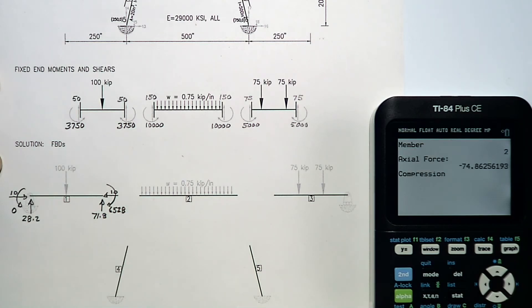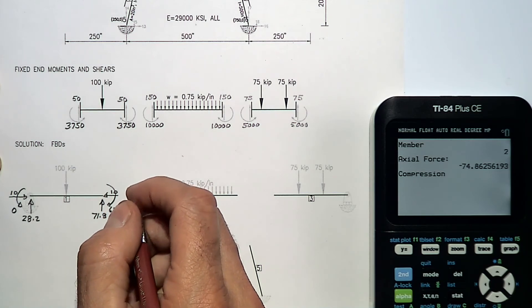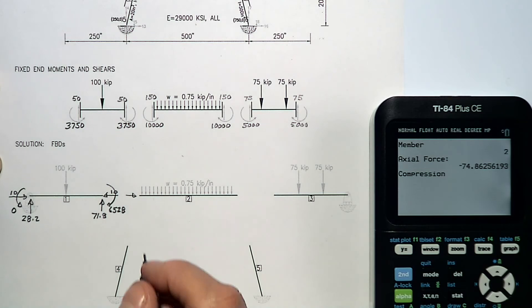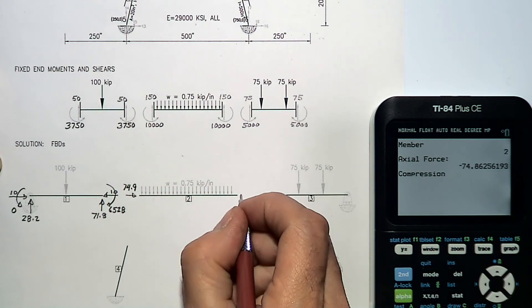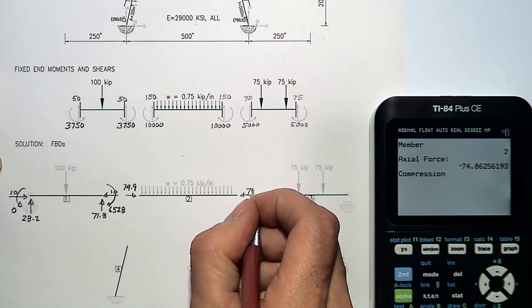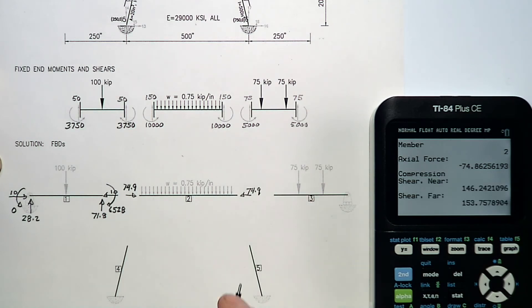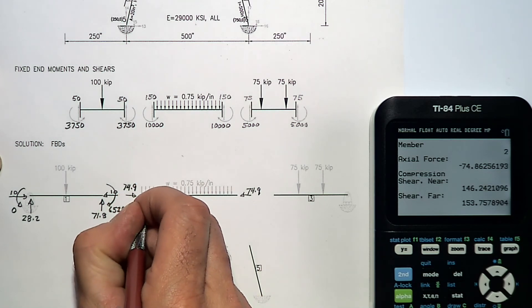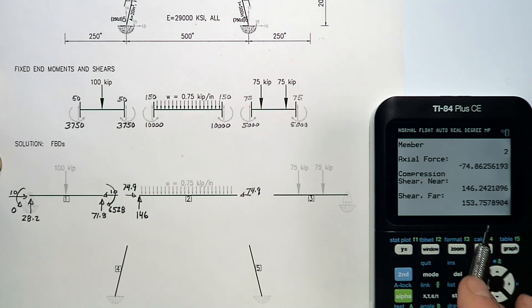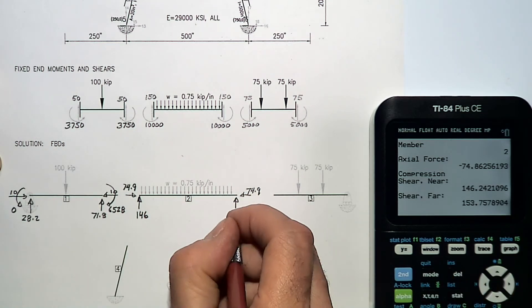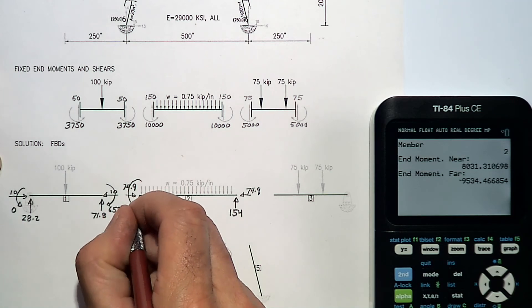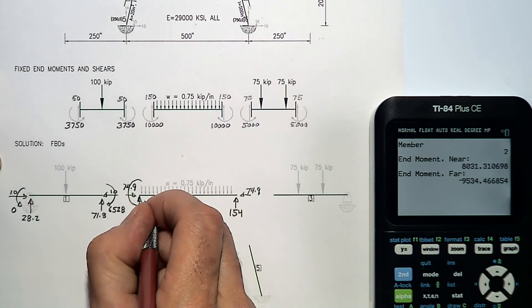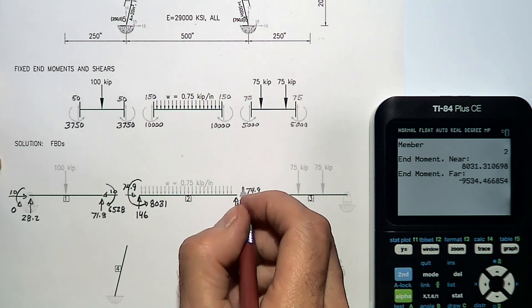Member two has an axial compression of 74.9 on both ends. Shear of 146 on the near end. Far end shear is 154. Near moment is 8,031. Far end moment is negative and therefore clockwise at 95.34.